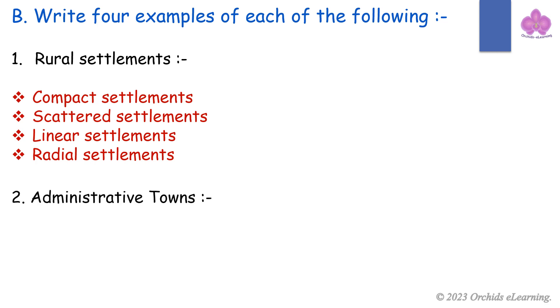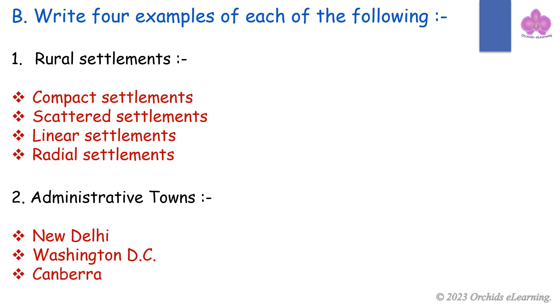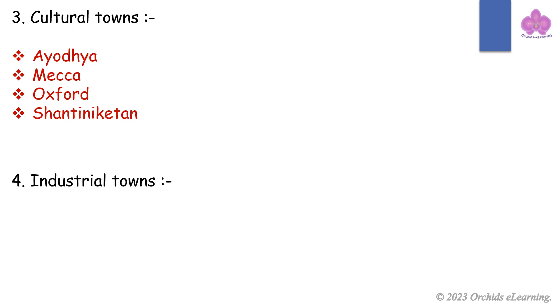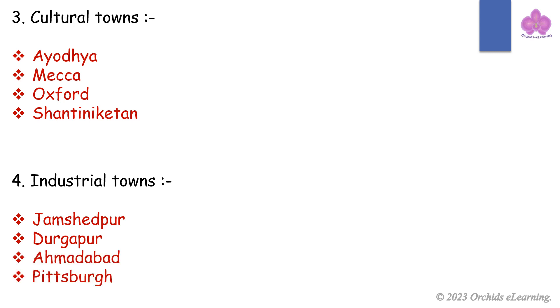Administrative towns: New Delhi, Washington DC, Canberra, Jaipur. Cultural towns: Ayodhya, Mecca, Oxford, Shantiniketan. Industrial towns: Jamshedpur, Dhanbad, Ahmedabad, Pittsburgh.